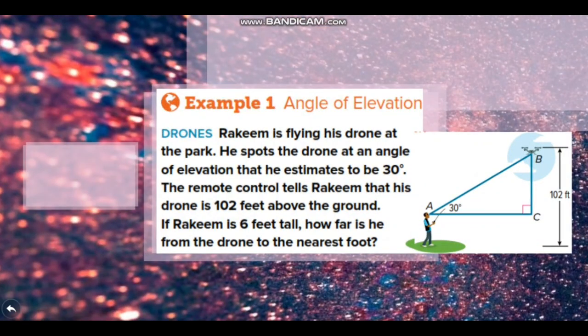Now let's look at this example. Rakim is flying his drone at the park. He spots the drone at an angle of elevation that he estimates to be 30 degrees. The remote control tells Rakim that his drone is 102 feet above the ground. If Rakim is 6 feet tall, how far is he from the drone to the nearest foot?